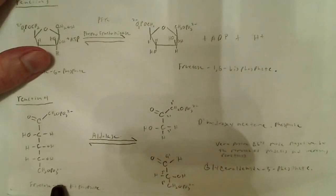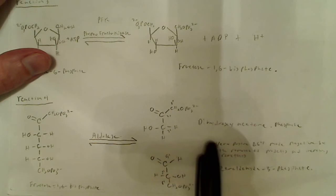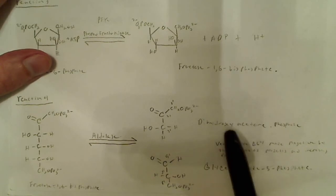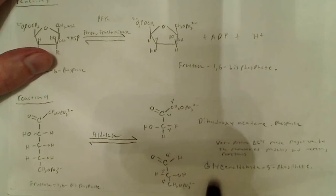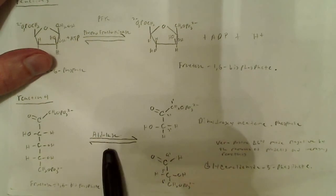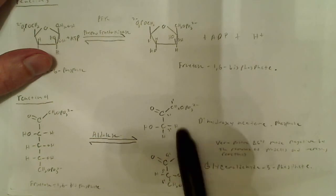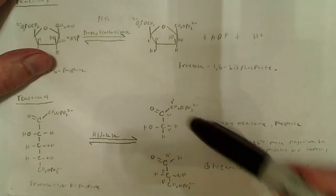Reaction 4: fructose 1,6-bisphosphate is converted to two separate three-carbon molecules — dihydroxyacetone phosphate and glyceraldehyde-3-phosphate. The enzyme is aldolase. This is important because the pathway splits here, and we'll end up with two pyruvates at the end. This is how the six-carbon molecule is split into two three-carbon molecules.